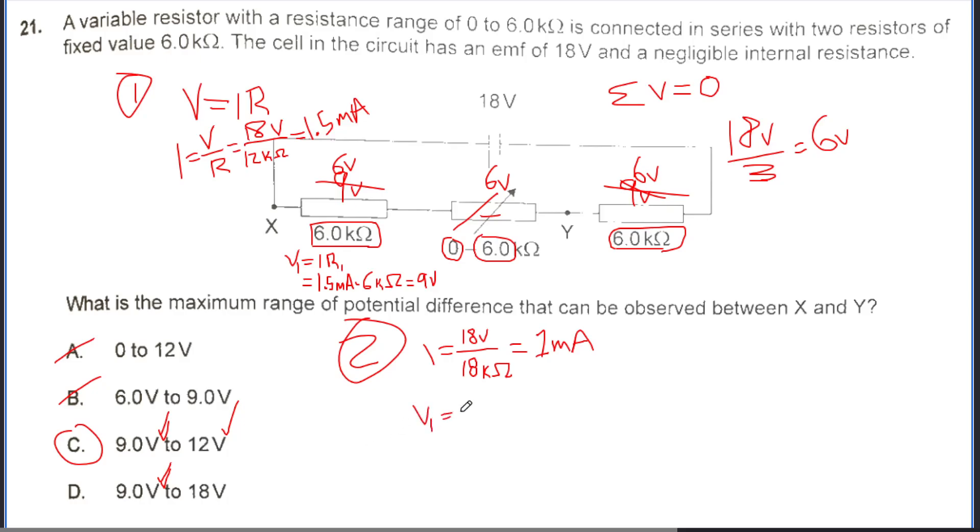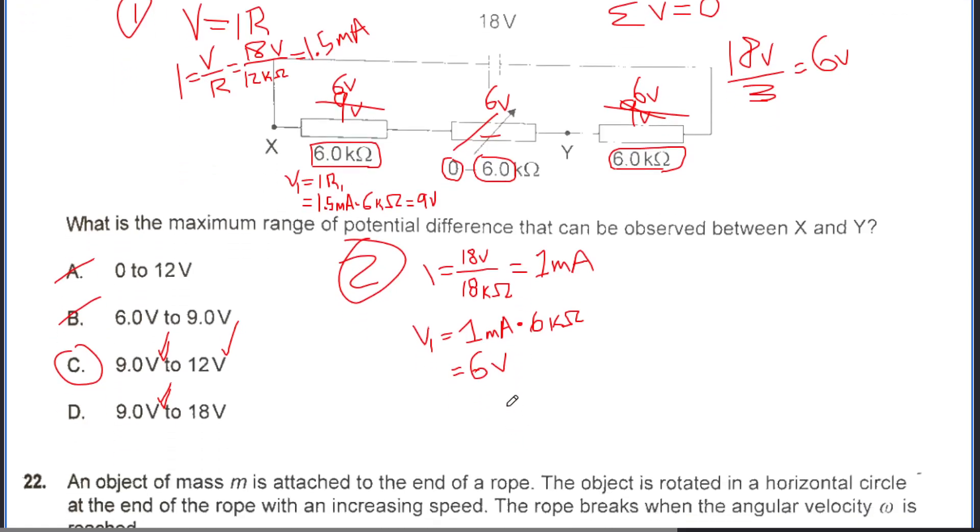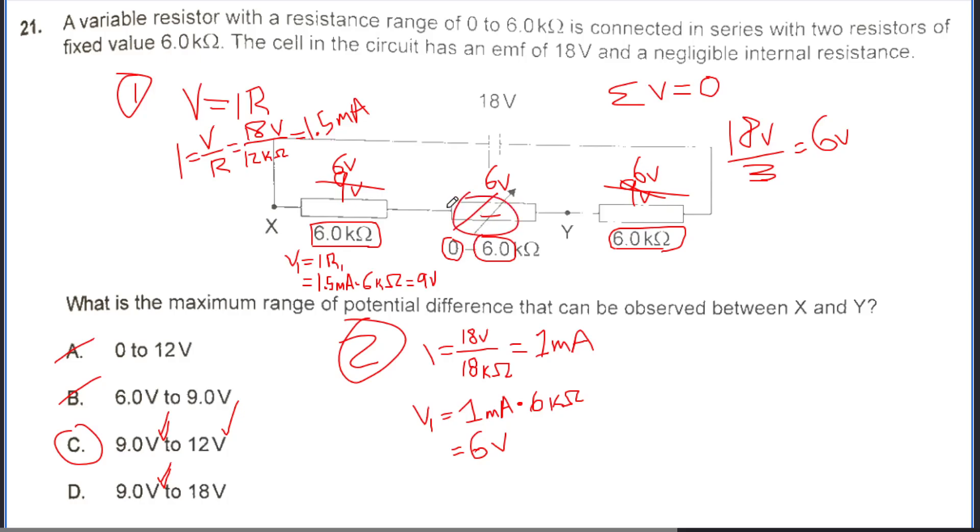So V1 is going to equal 1 milliamp times 6 kiloohms. This time it has a different current, and the voltage here is 6 volts. Now we need to consider the second resistor here because now it does have resistance. So V sub 2 equals the current times R sub 2. Current is 1 milliamp, resistance is 6 kiloohms, so the voltage is 6 volts. So the total voltage between X and Y is 6 volts plus 6 volts, which is 12 volts. So yes, that verifies our answer as C.